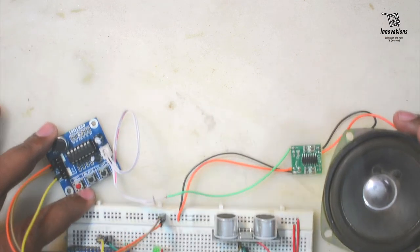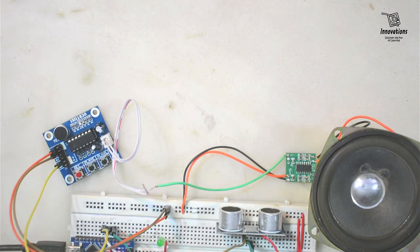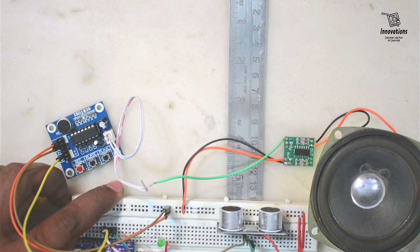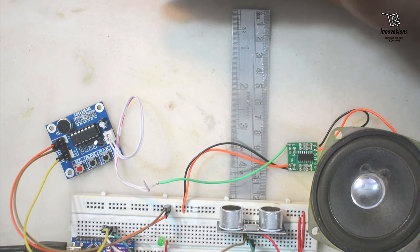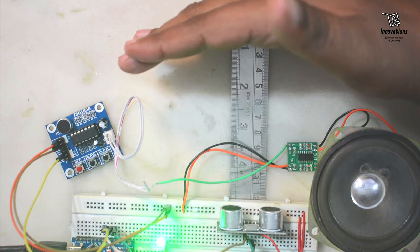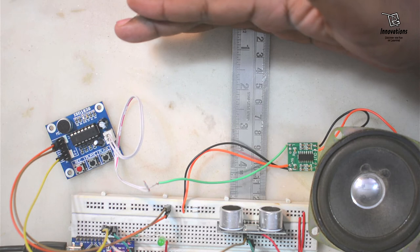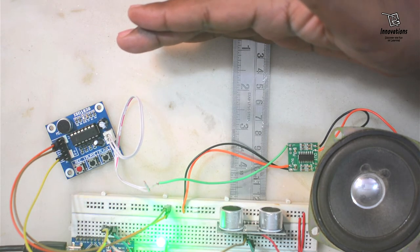Now we will test with the module. Now I am pulling back the entire system. Let me put a scale in front of this so that I can show you how accurately it works. I am putting my hand and bringing my hand forward. Alert! Do not cross beyond this point. At the exact distance of 10 cm, it is generating an alert. Alert! Do not cross beyond this point.